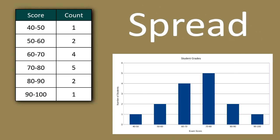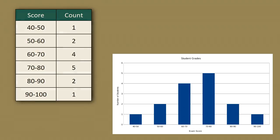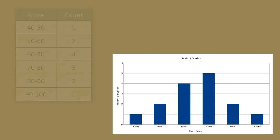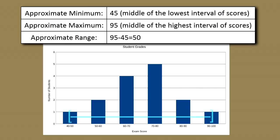The spread of the distribution — also called variability — can be described by the approximate range covered by the data. From the histogram we can approximate the minimum and maximum observations and thus approximate the range. In our exam score example, the approximate minimum is 45 and the approximate maximum is 95, giving an approximate range of about 50 points.